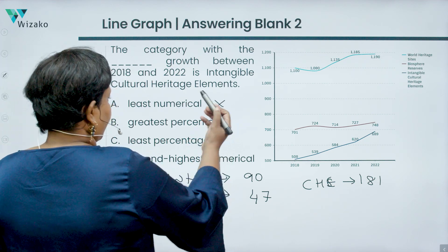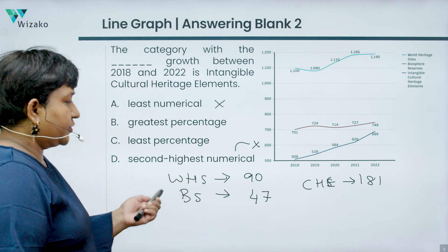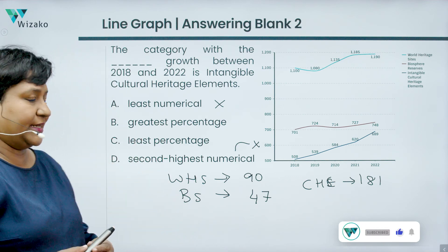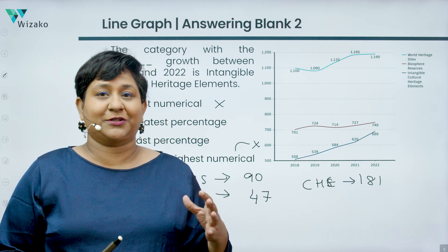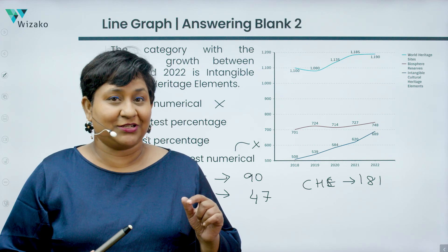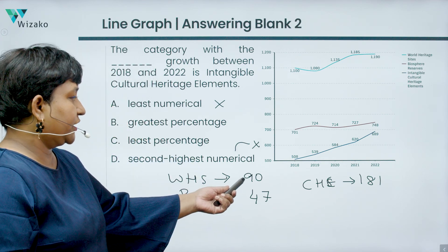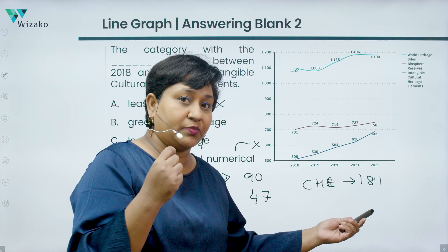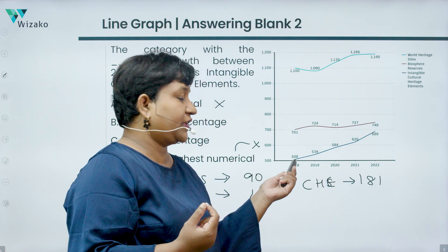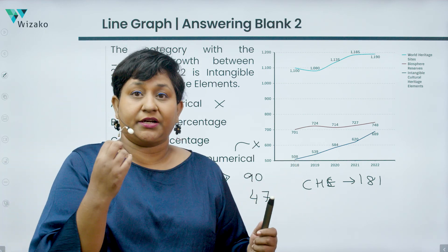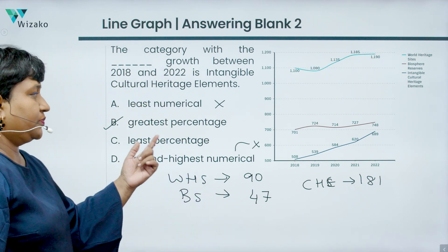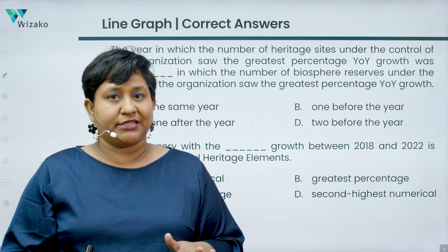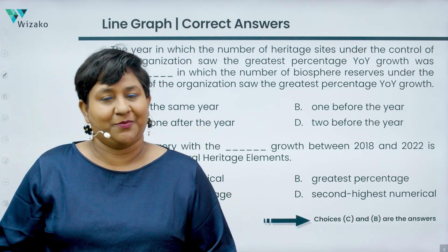Cultural elements has the highest numerical growth, but 'greatest numerical' is not one of the answer options — we can rule out 'least numerical' and 'second highest numerical' too, so we're looking at percentages. The logic: 181 over a base of 508 (smallest denominator) vs 90 over 1100 vs 47 over 700 — highest numerator on the smallest denominator means cultural heritage elements had the greatest percentage growth. So B — 'greatest percentage' — is the answer for the second question. Final answers: C and B.